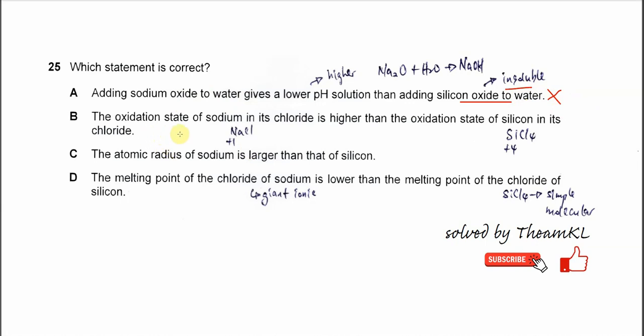B. The oxidation state of sodium in its chloride is higher than the oxidation state of silicon in its chloride.